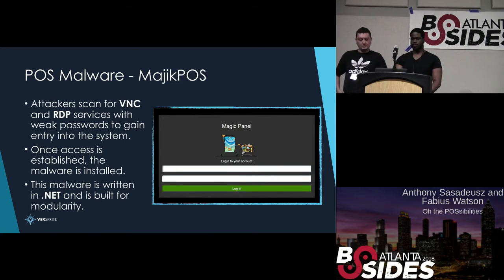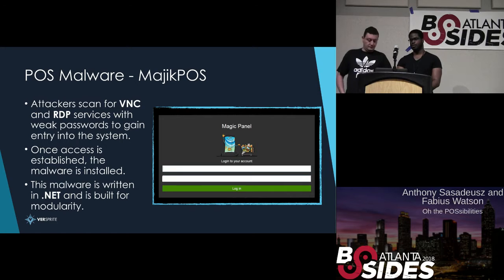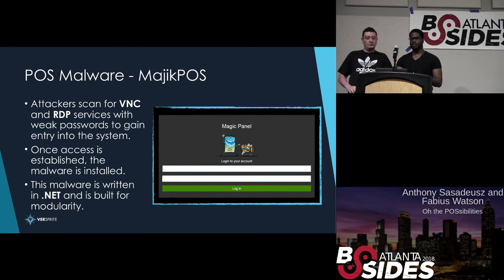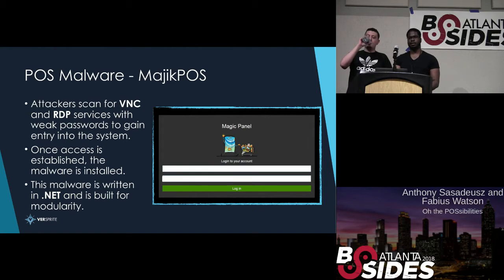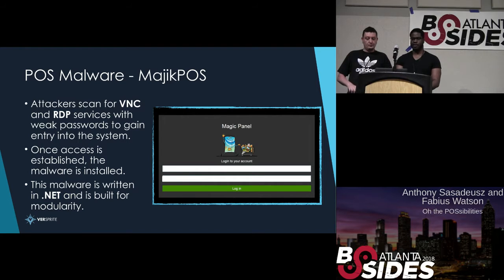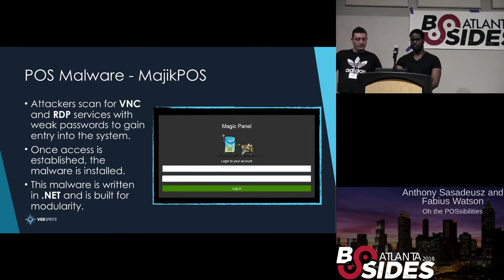Magic POS gets its name from the Magic panel. Attackers choose a network range, scan it for VNC and RDP services, and attempt to authenticate using a brute force attack. After authenticating, they install the malware, which is a .NET application, and then access its capabilities through the Magic panel.